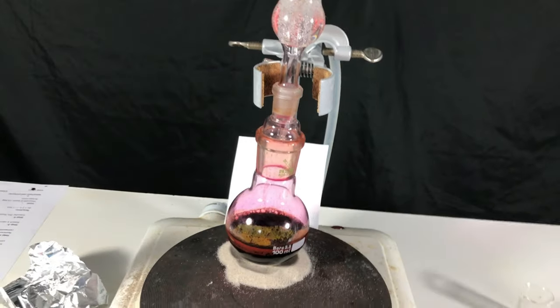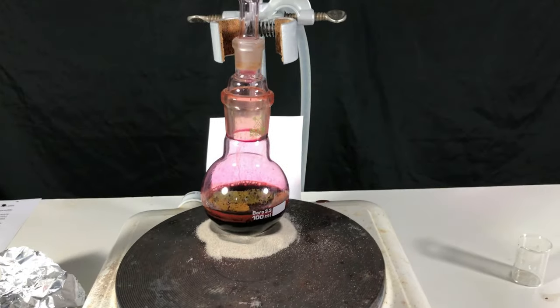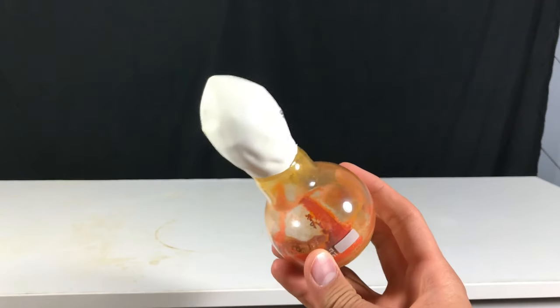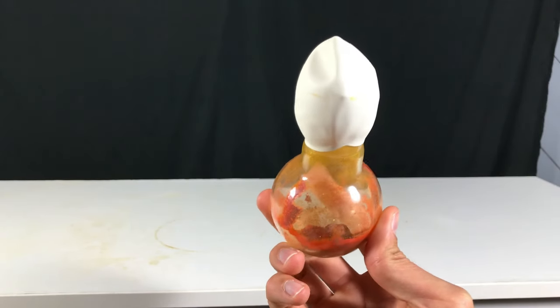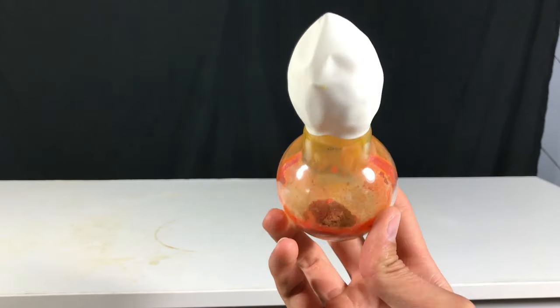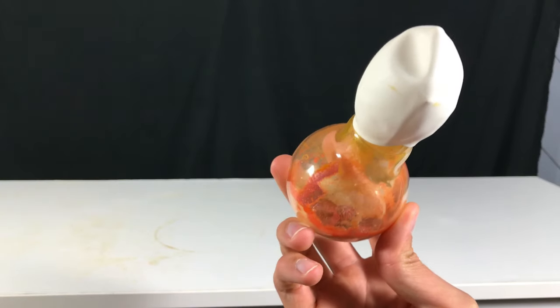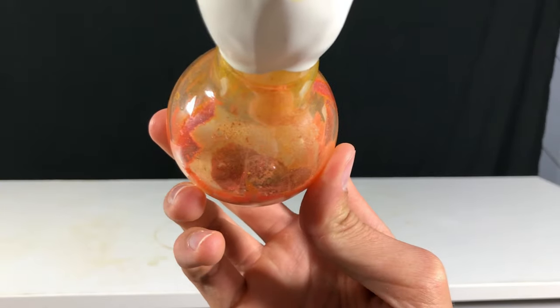When everything looked like this I turned off the hot plate. A normal balloon was put on top of the flask. The balloon acts as a sort of semi-permeable membrane. Iodine and DCM vapors can leave the flask while excluding humidity from entering it.